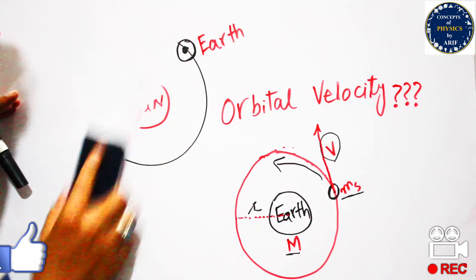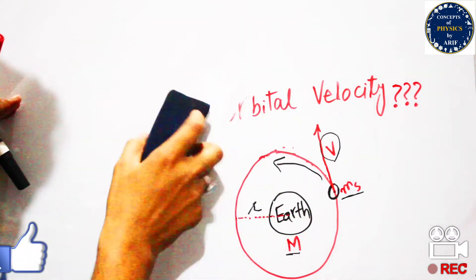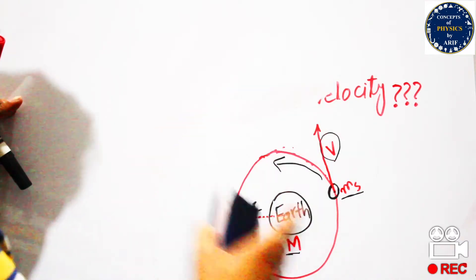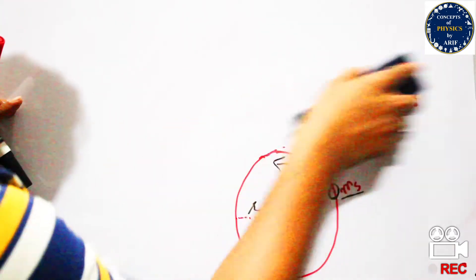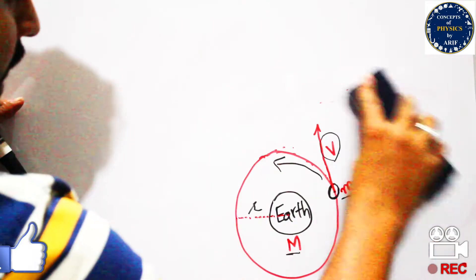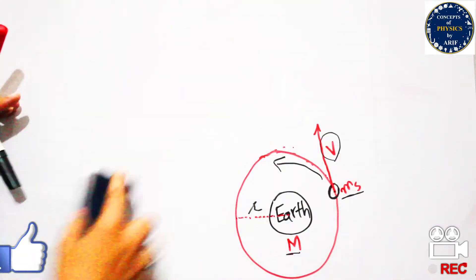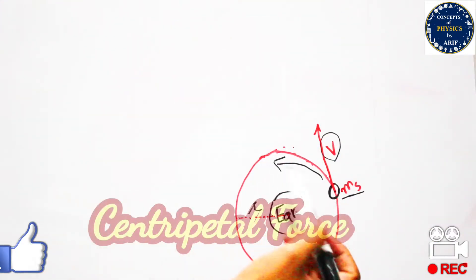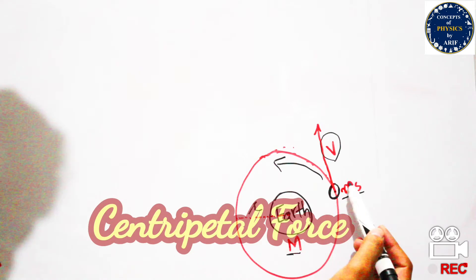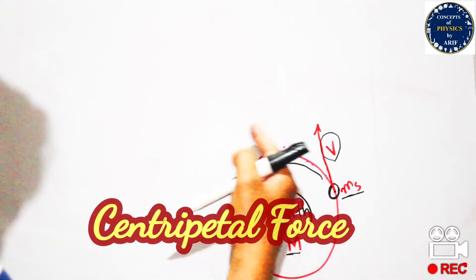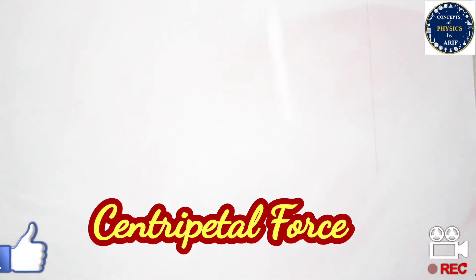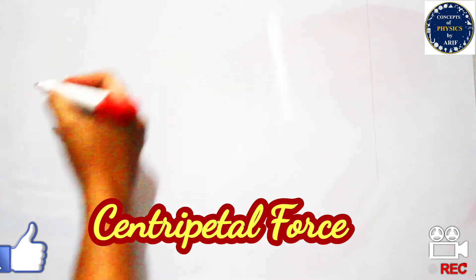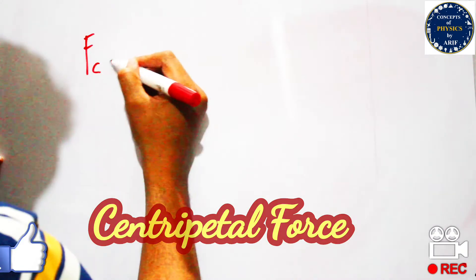In order to understand this concept, we first need to understand how this satellite is forced to move in a circular path. A centripetal force acts on the satellite to force it to move in a circular path and remain in orbit. The formula for centripetal force is: F_c = mv²/r.